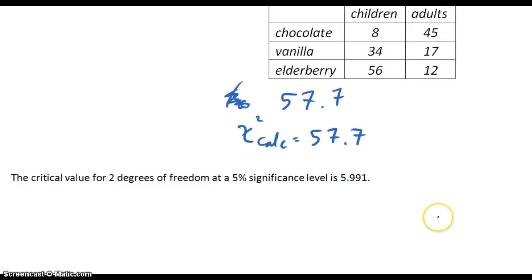The critical value for 2 degrees of freedom in this case at 5% significance level is 5.991. So if chi-squared calculated value is greater than the chi-squared critical value, you reject the null hypothesis.